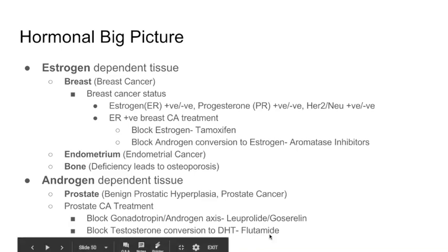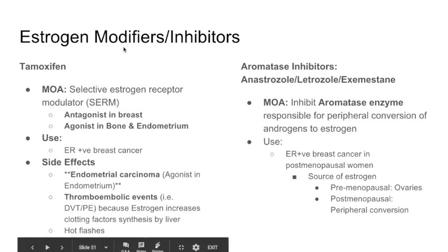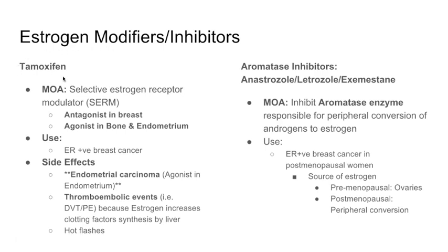Tamoxifen is a very high-yield drug. It's a selective estrogen receptor modulator, meaning it modulates the estrogen response at the receptor. It's a bit unusual: in the breast, it is an antagonist to estrogen — it blocks estrogen's effect. But in the bone and endometrium, it is actually an agonist — it stimulates the estrogen receptor.